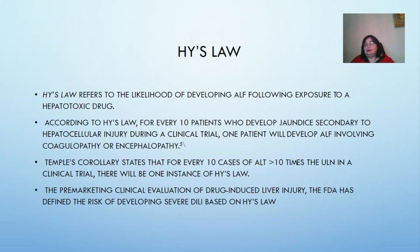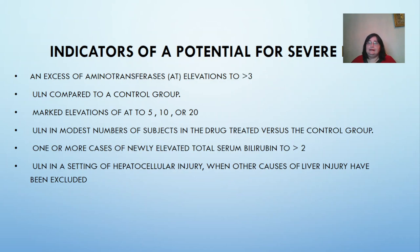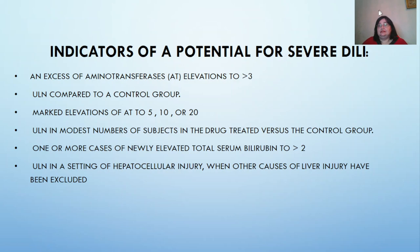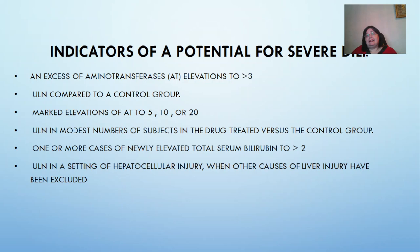The pre-marketing clinical evaluation of drug-induced liver injury: the FDA has defined the risk of developing severe drug-induced liver injury based on Hy's Law indicators of potential for severe drug-induced liver injury. These include: an excess of aminotransferase and alkaline phosphatase or other liver enzymes compared to a control group; marked elevation of alanine transferase to 5, 10, or 20 times the upper limit of normal in modest numbers of subjects in the drug-treated versus control group; and one or more cases of newly elevated total serum bilirubin greater than 2 times the upper limit of normal in the setting of hepatocellular injury when other causes of liver injury have been excluded.